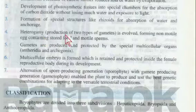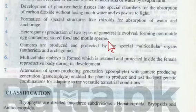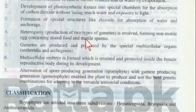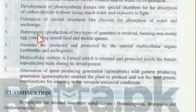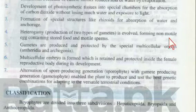Heterogamy — the production of two types of gametes — evolved in bryophytes, forming a non-motile egg containing stored food and motile sperms. Heterogamy means two types of gametes are produced, as opposed to homogamy which involves one kind. The egg is non-motile, meaning it cannot move, while the sperm is motile and can move.